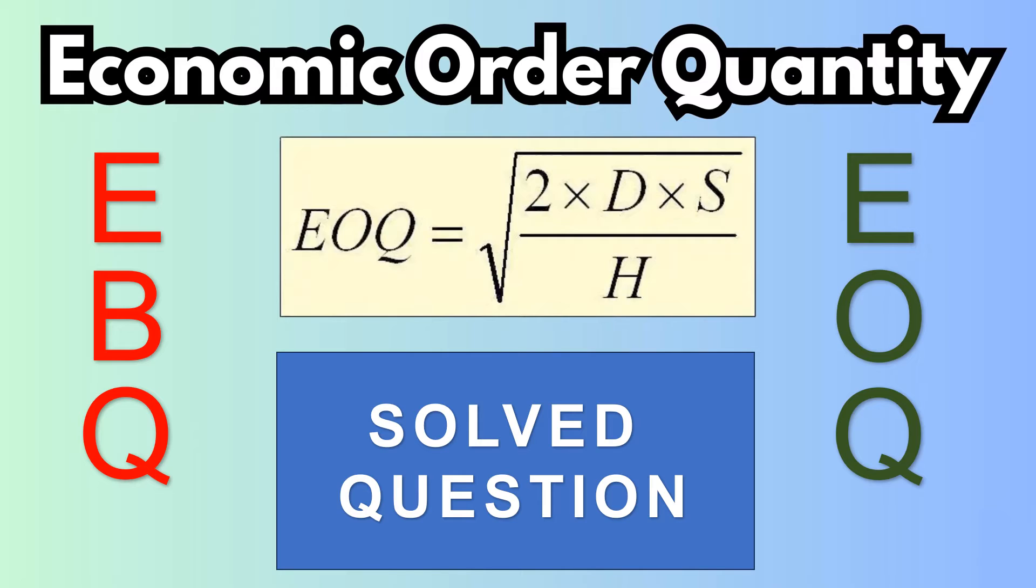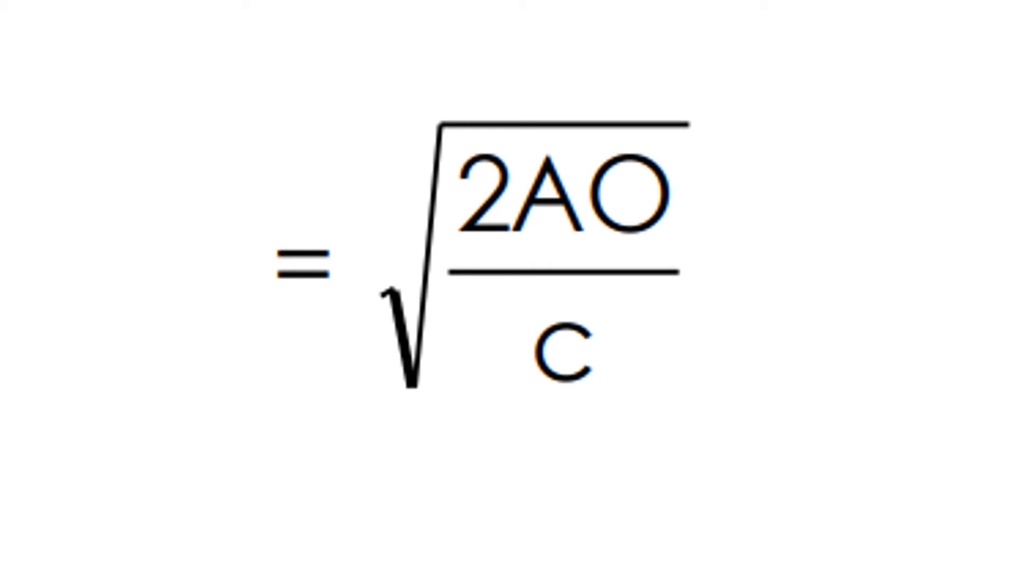Economic Batch Quantity is calculated by multiplying annual consumption of units ordered along with cost per order into two, dividing it by the carrying cost.